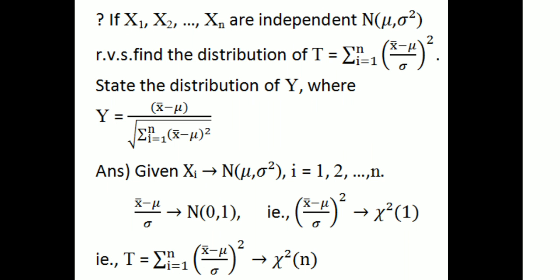Next question: if x₁, x₂, …, xₙ are independent random variables each following N(μ, σ²), find the distribution of t = Σᵢ₌₁ⁿ (xᵢ − μ/σ)² and state the distribution of y = (x̄ − μ) / √[Σᵢ₌₁ⁿ (xᵢ − μ)²].